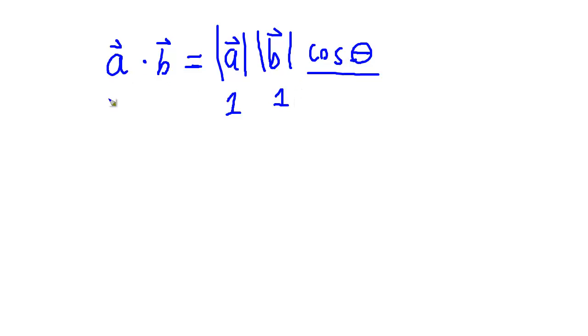Alright, so then if a's length is one and b's length is one, and look, I'll even cheat here. Let's treat them as normalized vectors now that we understand the notation. Normalized a dot b, well,